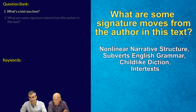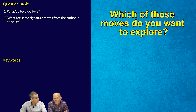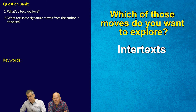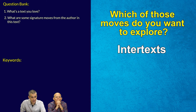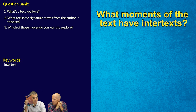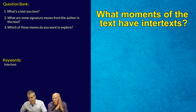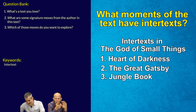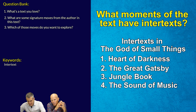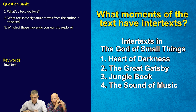The HLE calls for a broad linguistic or literary perspective. The intertexts really stand out as interesting to explore. In The God of Small Things, there are several precise intertexts: we see Heart of Darkness, The Great Gatsby, Jungle Book by Rudyard Kipling, and The Sound of Music. These are four intertexts — among others — that she uses to help emphasize themes, and each one probably corresponds to a different theme or idea.